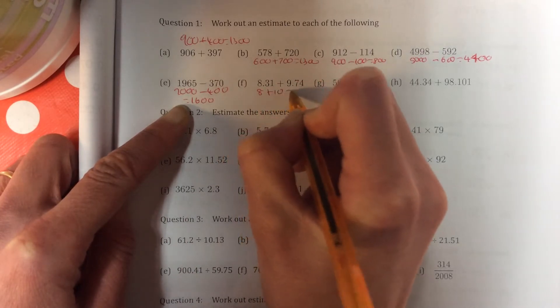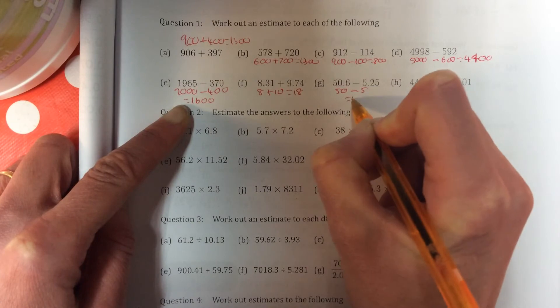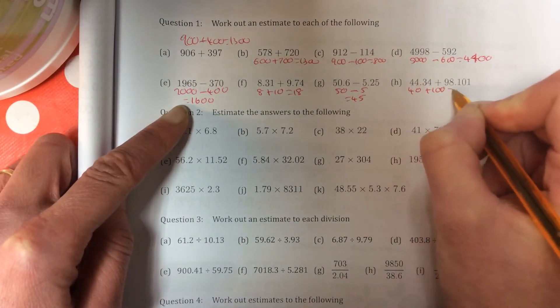8 add 10 is 18. So it's 50 minus 5. So you're trying to get just one significant figure. 40 add 100, 140.